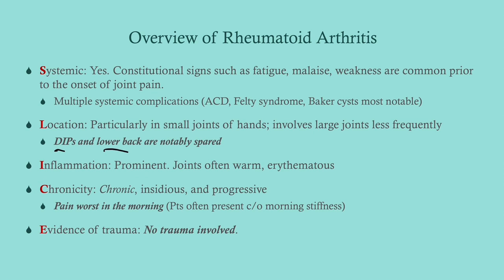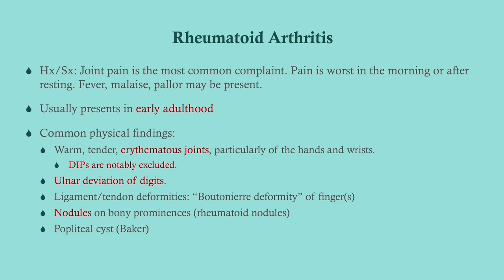I is for inflammation — are the affected joints red, warm, and tender? In RA they will be warm and erythematous. C is for chronicity — if this is acute, think septic or reactive arthritis; if it's been going on for months, consider RA. Also, pain that is bad in the morning and improves as the day goes on suggests an inflammatory autoimmune cause, whereas pain that worsens through the day suggests osteoarthritis. E is for evidence of trauma — none in RA.